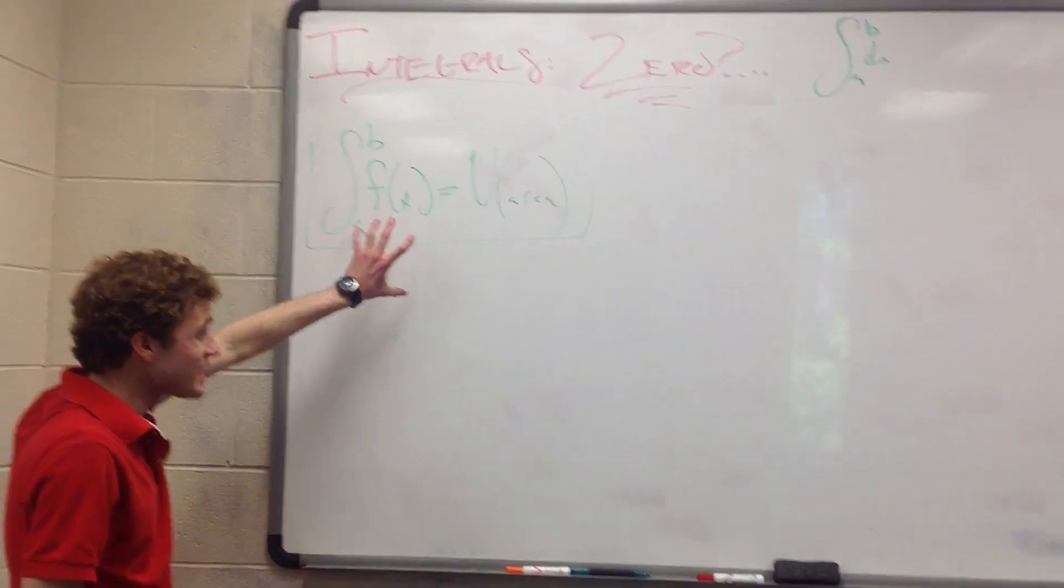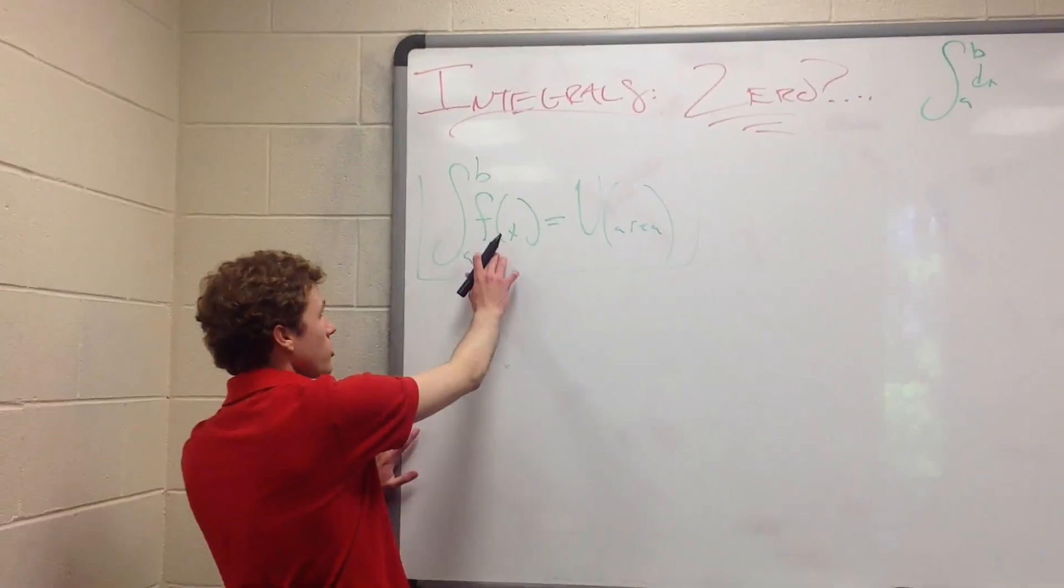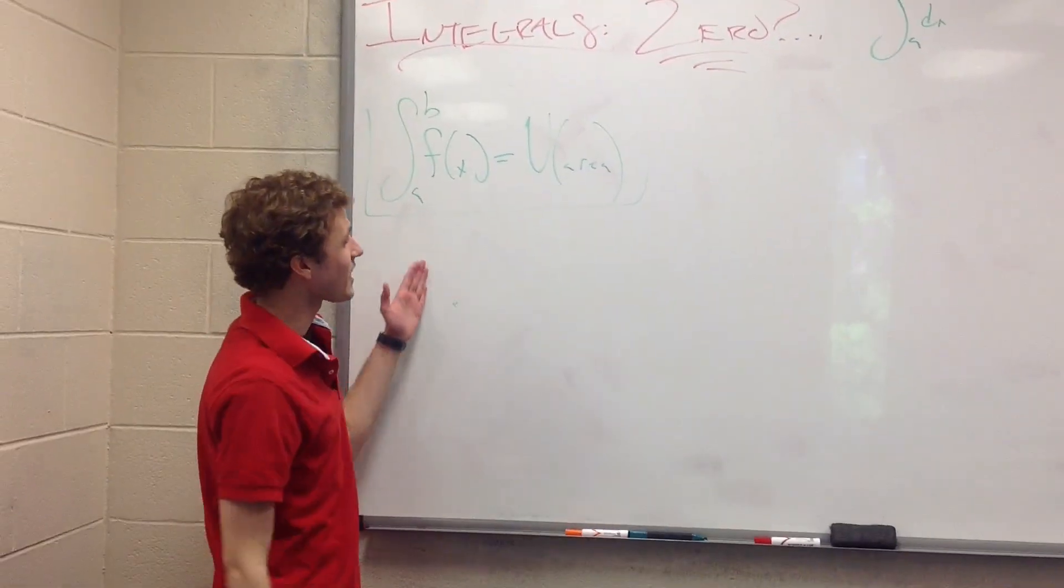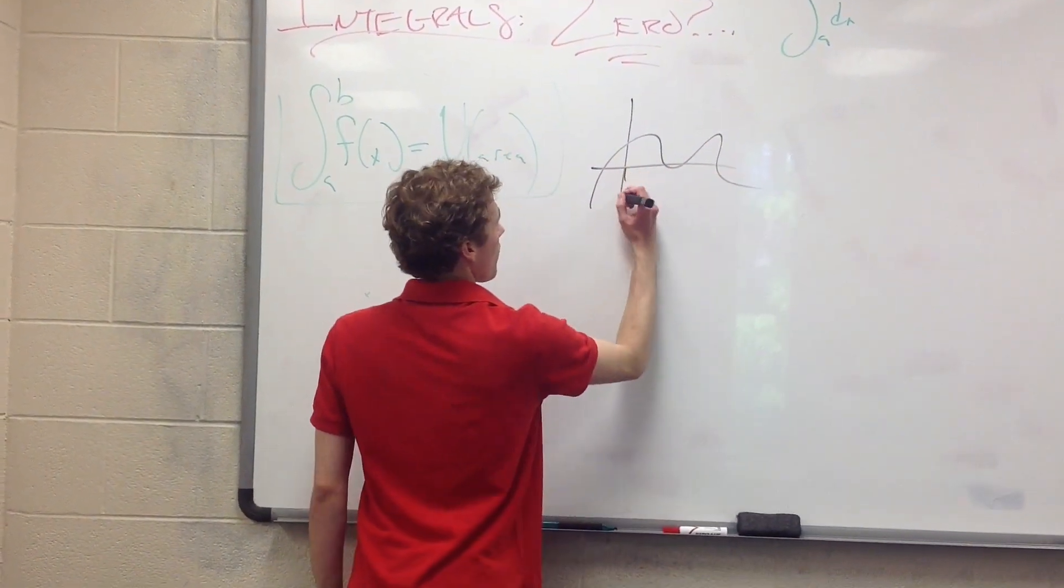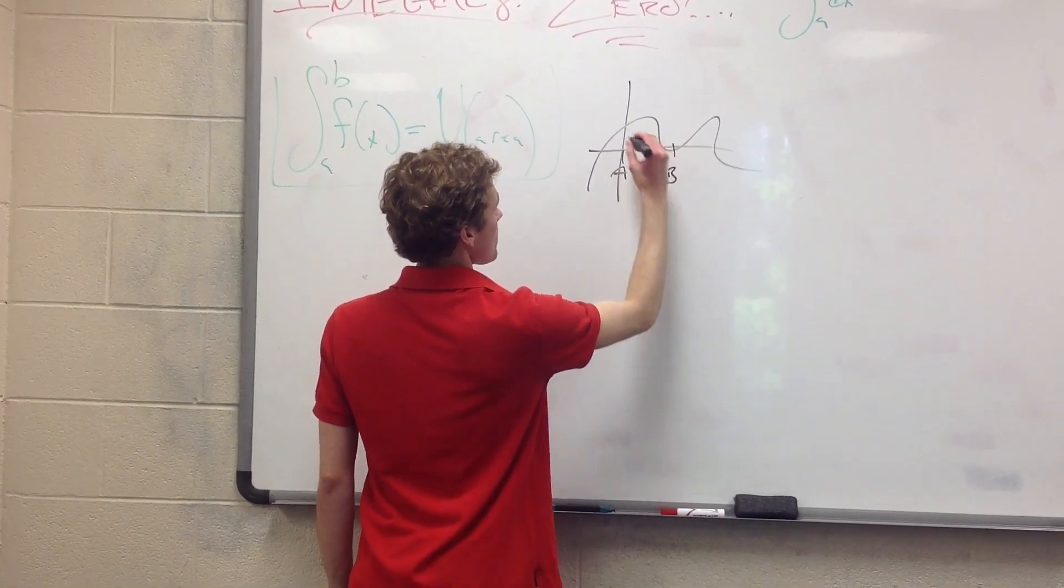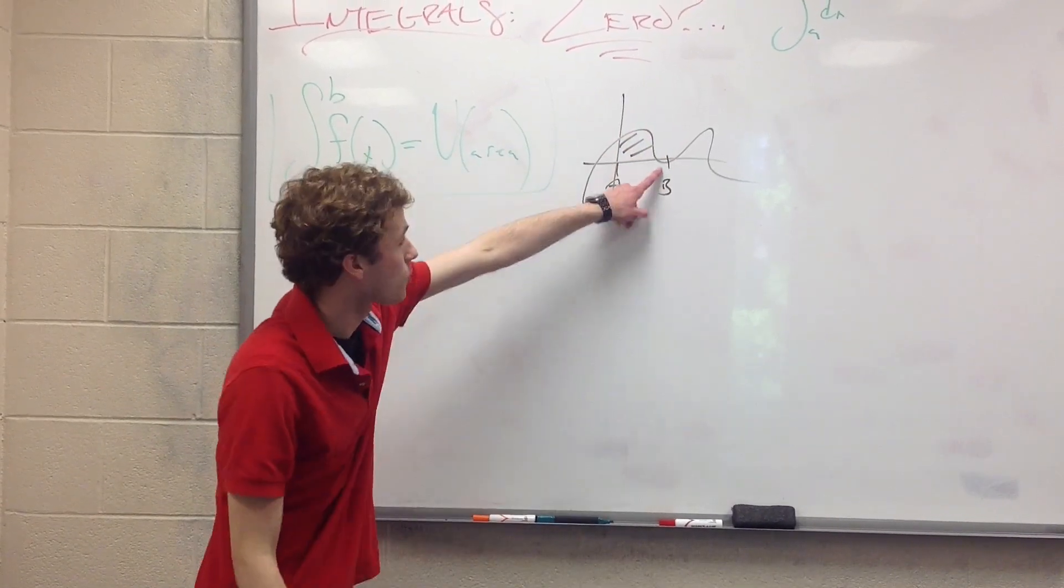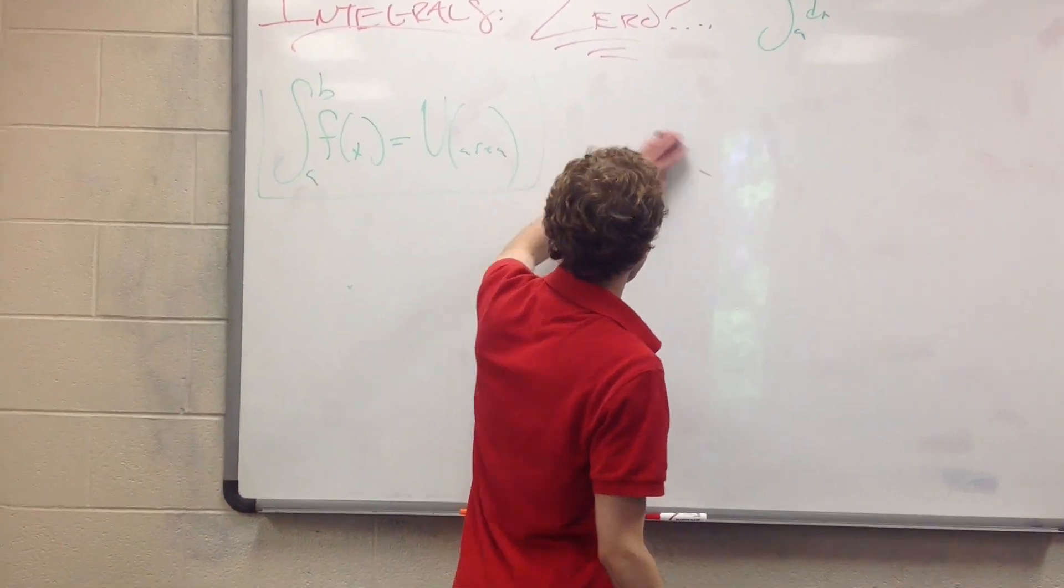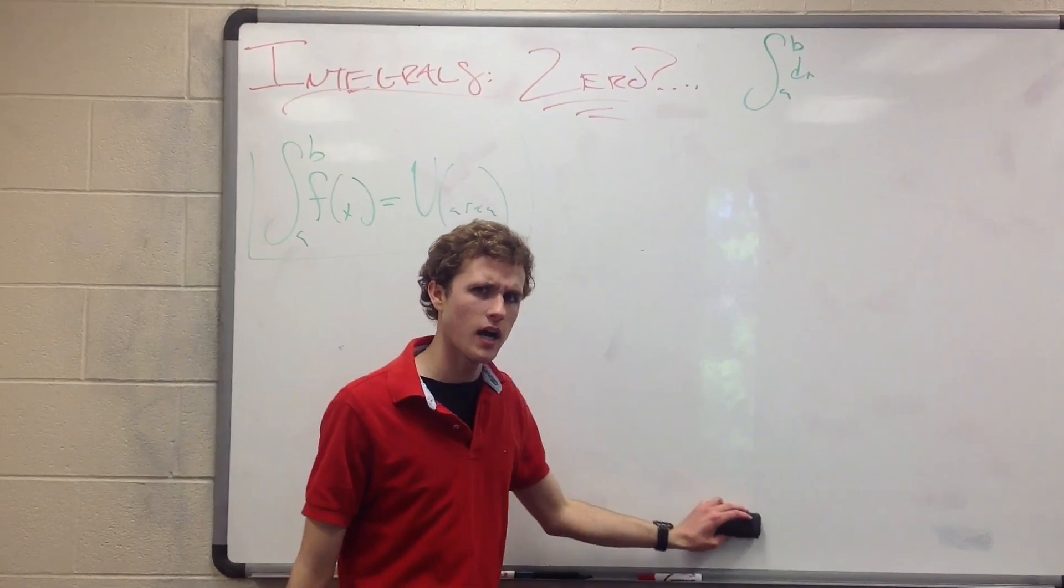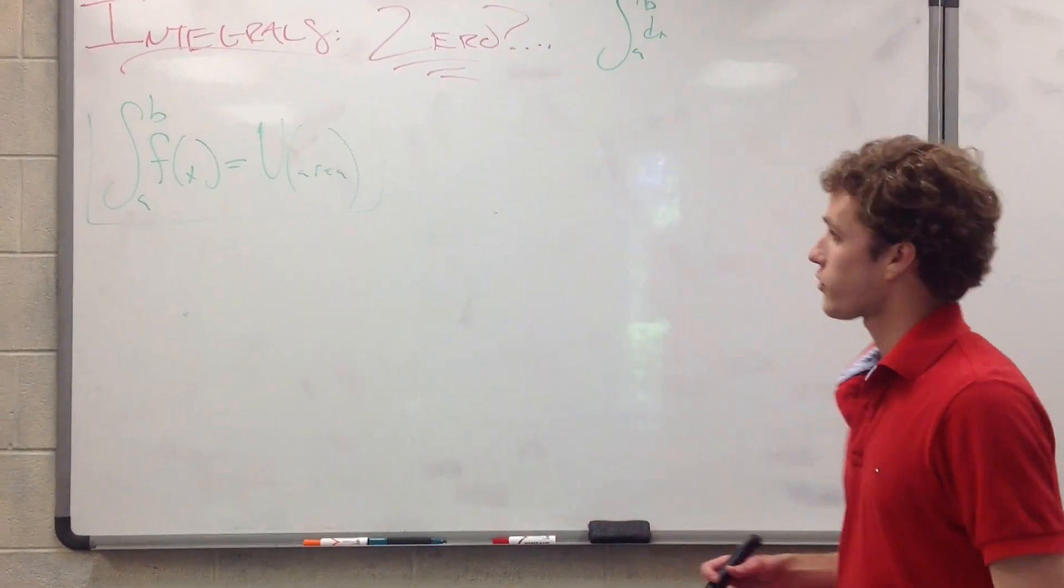If a definite integral is something that takes a function over an interval and gives you area, which, what's that look like? It looks like this, right? A, B, how much area is in between A and B? That's all that's saying. So, if that's what this does, then how can we have no area in between A and B? Well, let's think about a couple of things first.